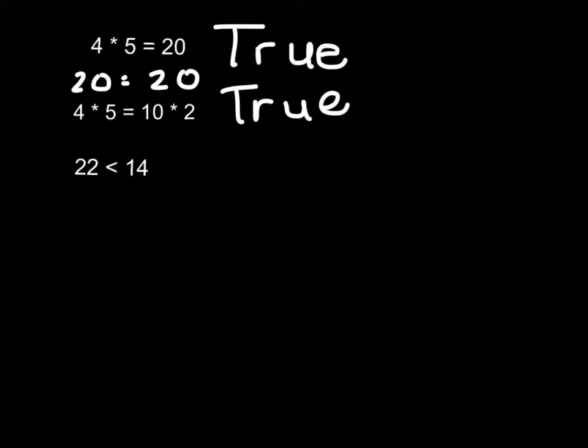Sometimes, though, a number sentence may not have an equal sign. It could have a greater than or less than sign. In the next mathematical equation, 22 is less than 14 is false. 22 is actually greater than 14.